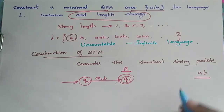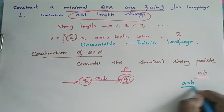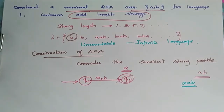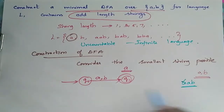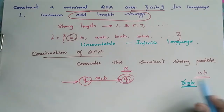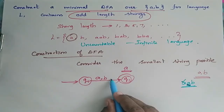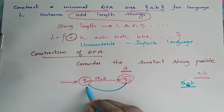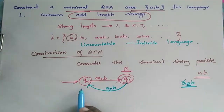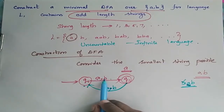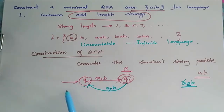Now for the next case, let it be AAB. At state Q0, it accepts A and moves to Q1. At Q1, the final state, it accepts A. In order to complete a three-character string, it has to accept one more character. So I give a link such that if Q1 accepts A or B, it moves back to Q0, then Q0 accepts one more A or B and goes to the final state Q1. This is the DFA for the language containing odd-length strings.